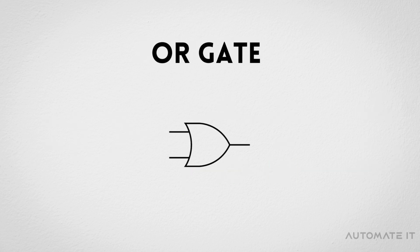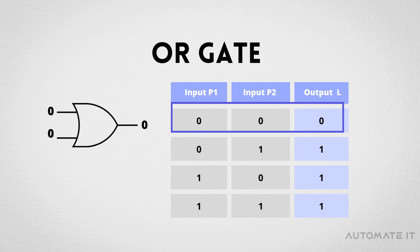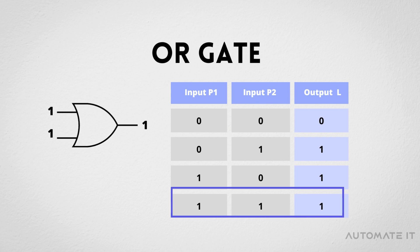OR-GATE. If both inputs are low in the OR-GATE, then the output will be low. For all other cases, the output will be high.